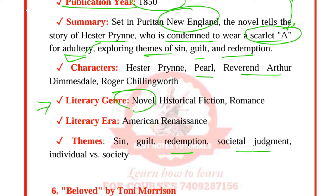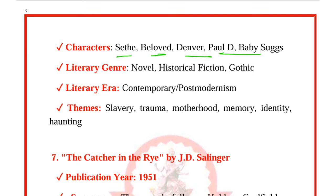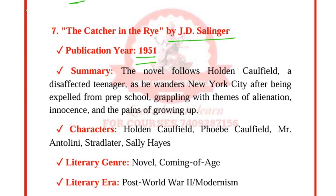The Catcher in the Rye by J.D. Salinger was published in 1951. The novel follows Holden Caulfield, a disaffected teenager, as he wanders New York City after being expelled from prep school, grappling with themes of alienation, innocence, and the pains of growing up. Note the setting — New York City — as questions are often asked about where a work is set. Characters include Holden Caulfield, Phoebe Caulfield, Mr. Antolini, Stradlater, and Sally Hayes. It is post-modern. Themes are alienation, innocence, identity loss, and the phoniness of the adult world.